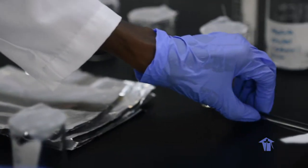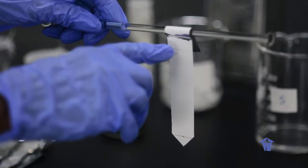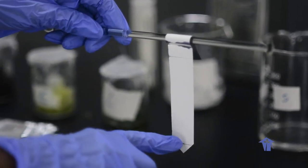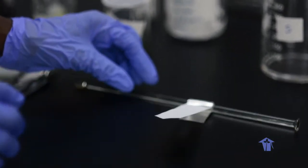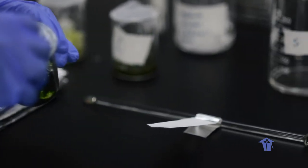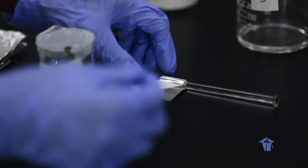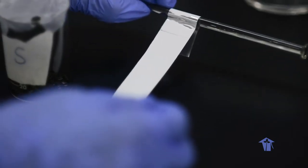On my chromatography paper, you'll notice I have drawn two lines. This first line is the area where I'm going to put a drop, or a few drops actually, of my spinach solution right at this point.